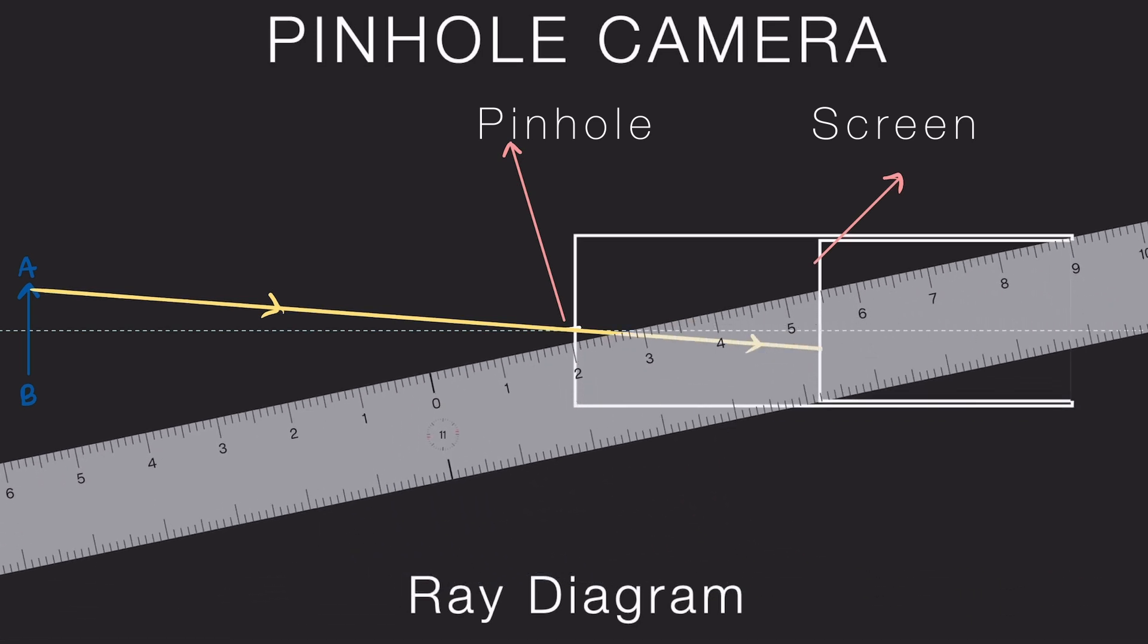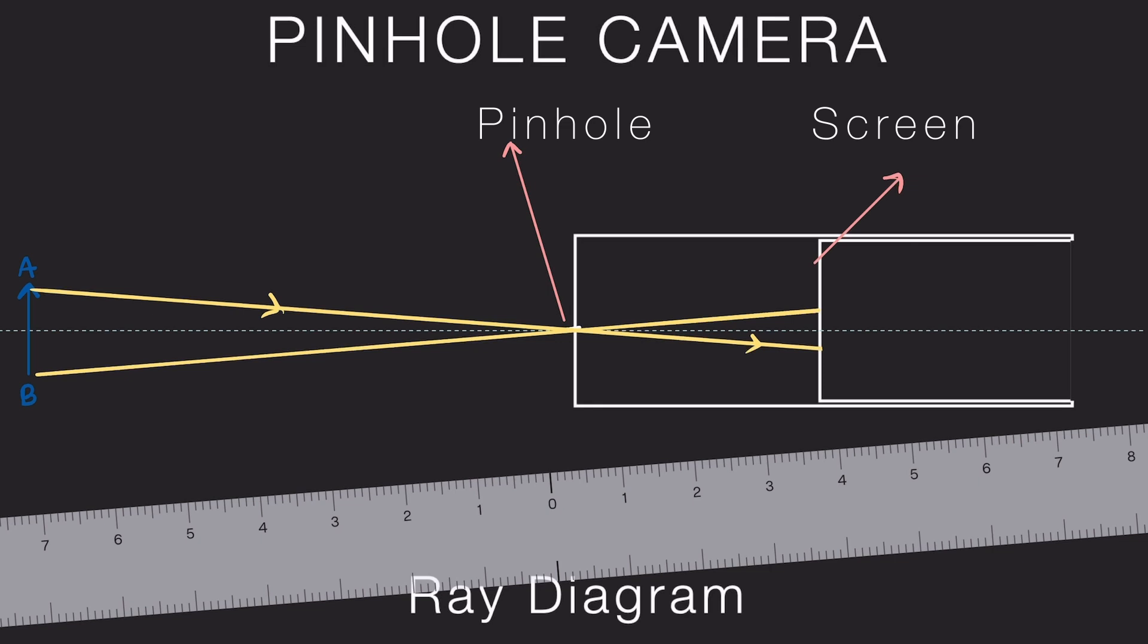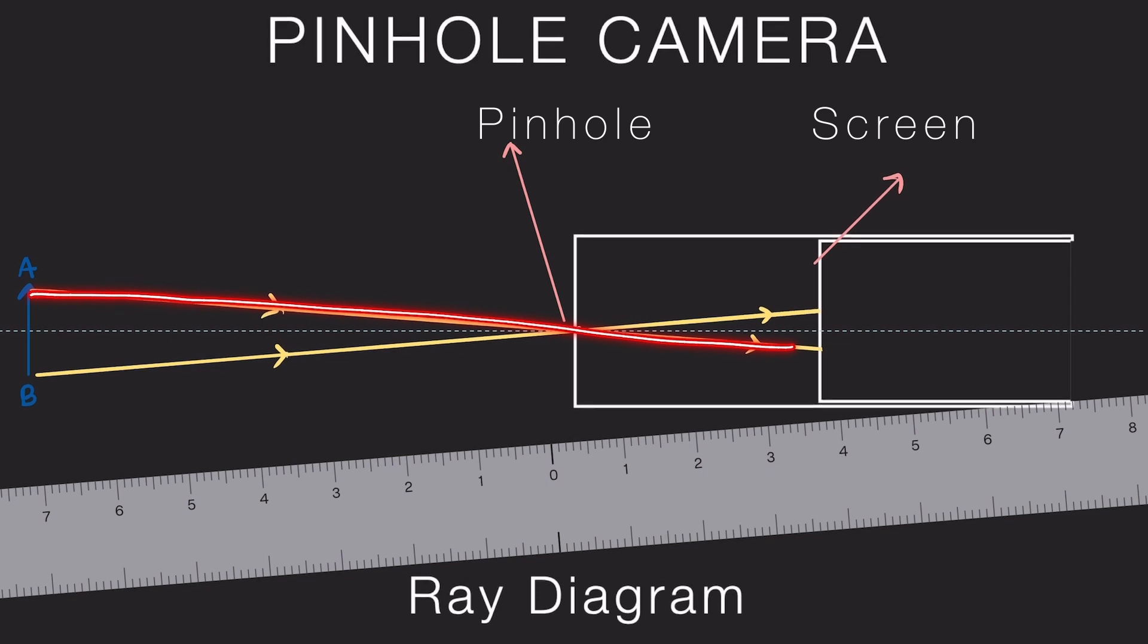Now let's take point B at the bottom. A ray of light from B also passes through the pinhole and continues straight onto the screen. Now look at where they fall on the screen. The ray from A ends up down here, and the ray from B ends up up here.